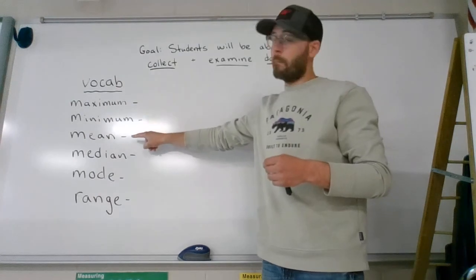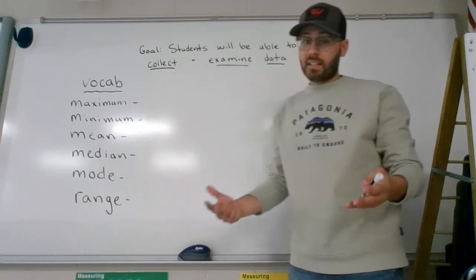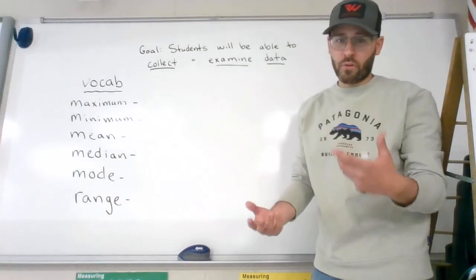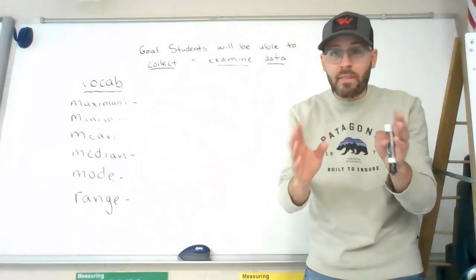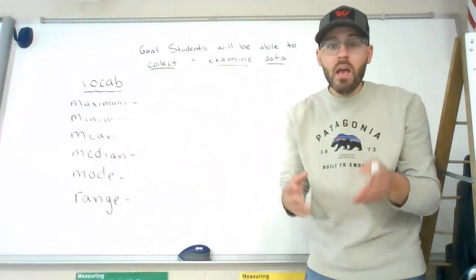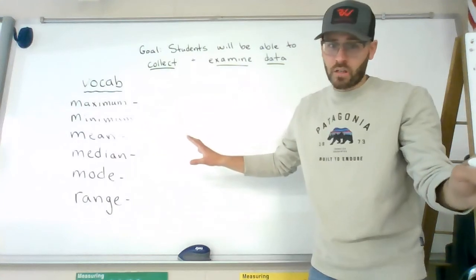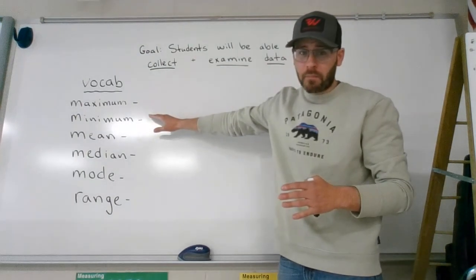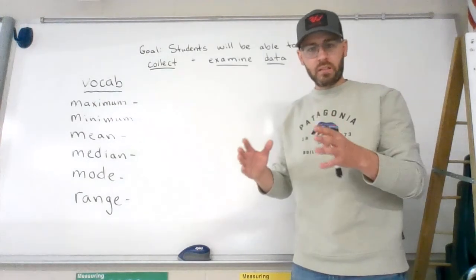Maximum, minimum, mean, median, mode, range. Six different benchmarks is what we call them. Benchmarks are things we look at to help us better understand the data or the information that we have gathered, whether it be from how tall your family is or how many bedrooms. These benchmarks help us see things a little bit clearer, especially when there's a lot of numbers to deal with, especially in business type things. But I know you know what maximum and minimum mean, because we've dealt with those before. Maximum is the most. Minimum is the least.